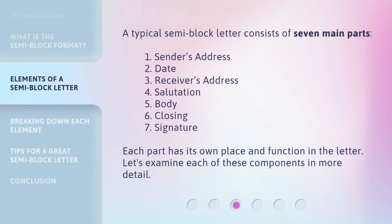A typical semi-block letter consists of seven main parts: Sender's Address, Date, Receiver's Address, Salutation, Body, Closing, and Signature. Each part has its own place and function in the letter. Let's examine each of these components in more detail.